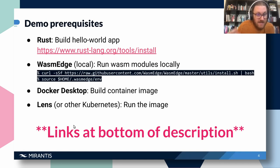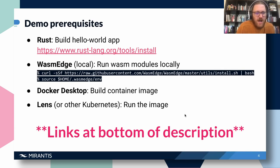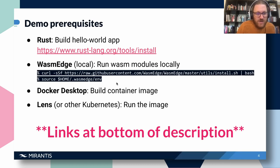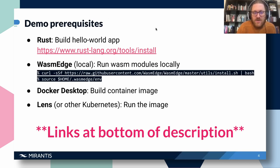The two pieces you might need to download are Rust — the best way is to go to rustup.org/tools/install — and then WasmEdge, the WebAssembly runtime. You can follow the command line instructions to get going with that. We're also going to put a link in the chat with the same instructions, so you can get set up and be ready to go by the time we get to the demo.